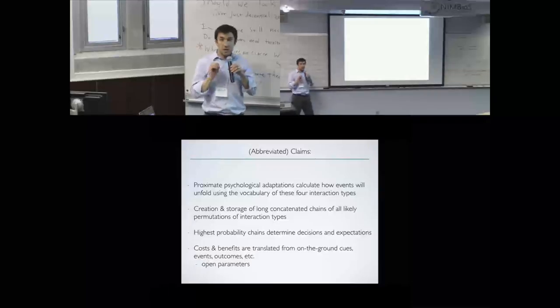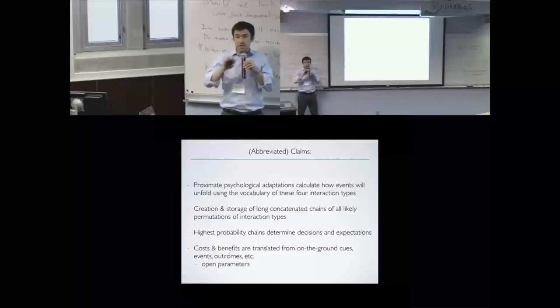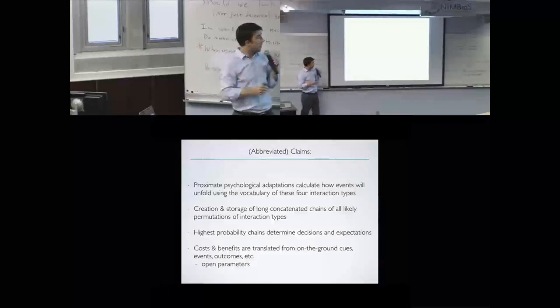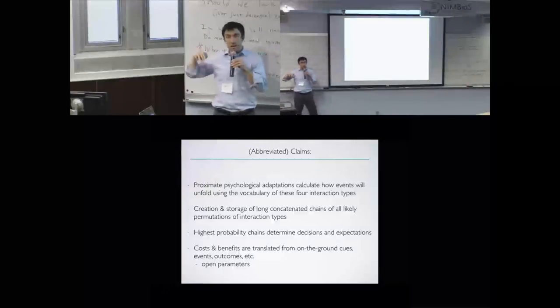Obviously, costs and benefits are open parameters in this model, meaning that there's obviously on-the-ground cues of what counts as a cost, what counts as a benefit. These are open parameters, meaning they're free to vary, and there's a separate part of the psychology that's translating costs into concrete outcomes, concrete decisions.